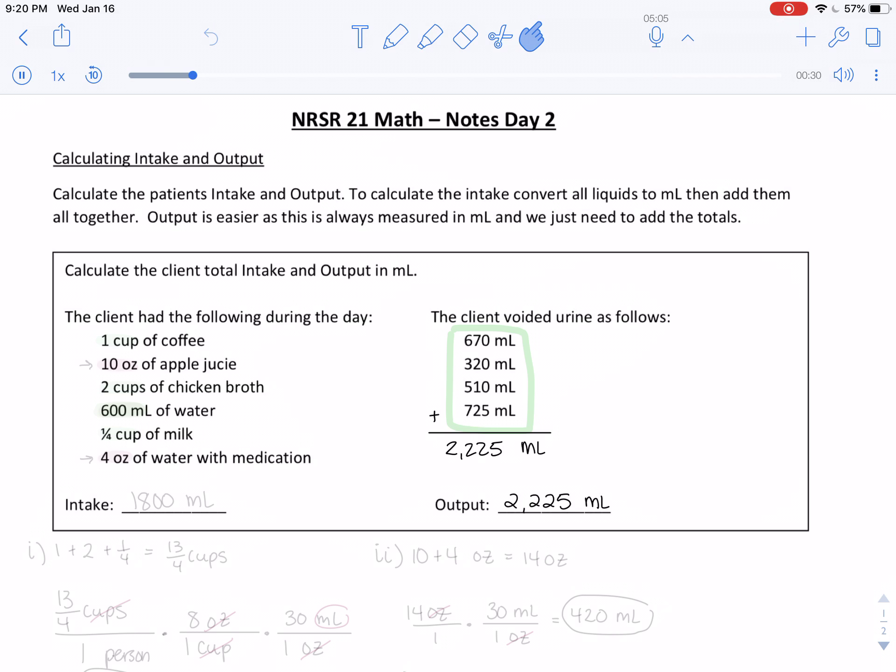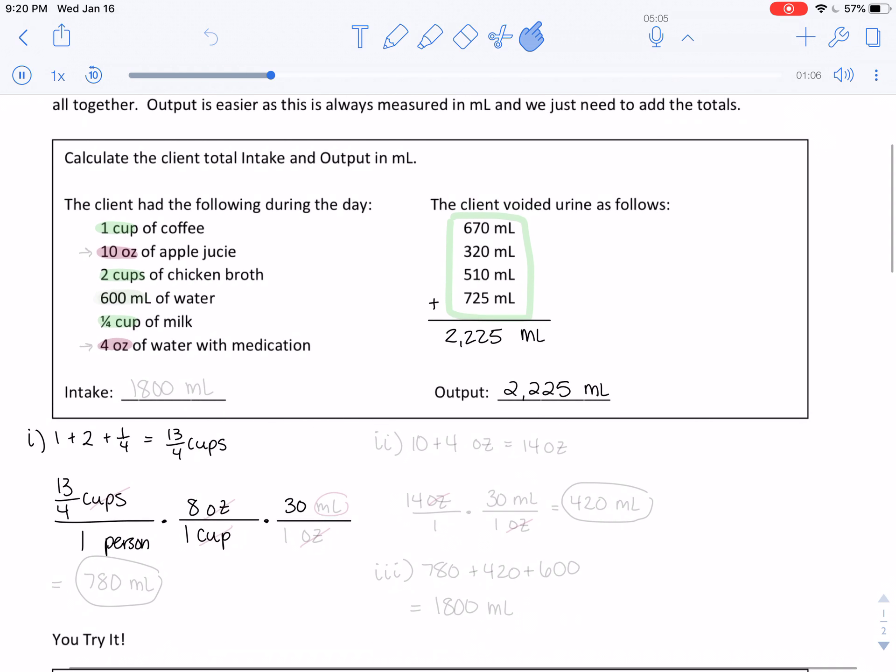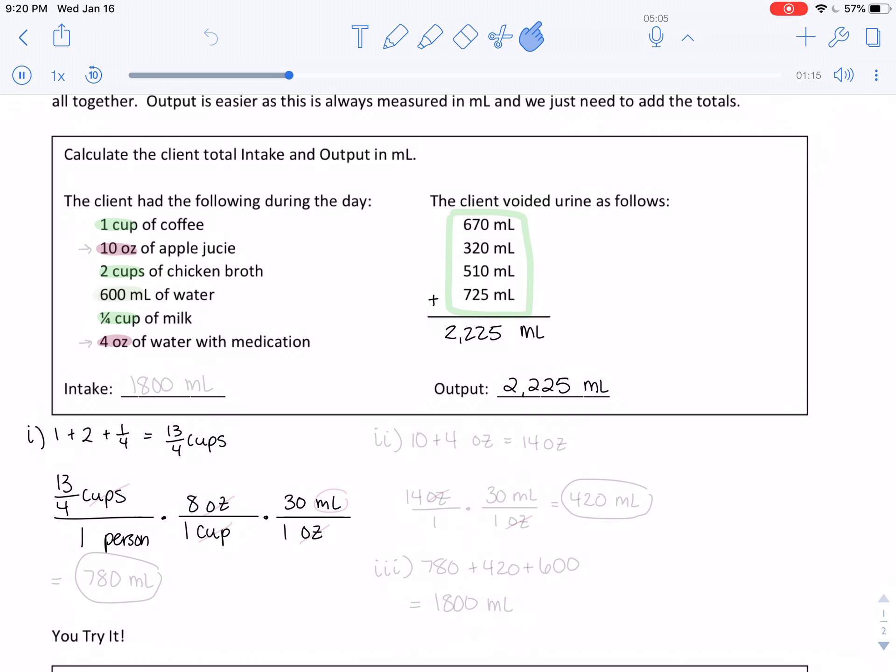But on the left side, we have cups, we have ounces, and then we have one that's in milliliters. For part one, I want to add all the cups together: one plus two plus one quarter, and that's 13 quarter cups. In every cup, there are 8 ounces per cup, and there are 30 milliliters per one ounce. Canceling cups with cups and ounces with ounces leaves us with milliliters, which is what we want. We get 13 over 4 times 8 times 30, which is 780 milliliters.